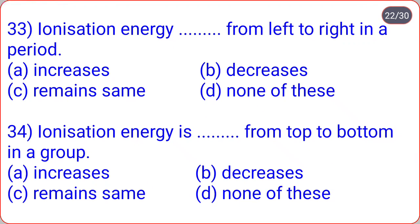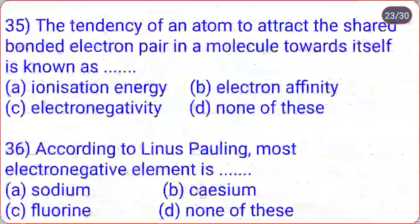Ionization energy increases from left to right in a period — option A. Ionization energy decreases from top to bottom in a group.